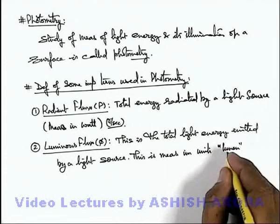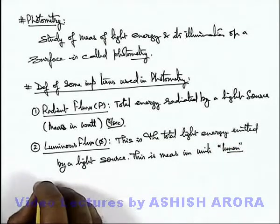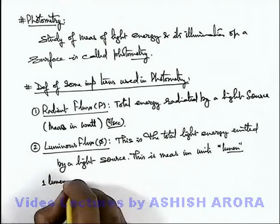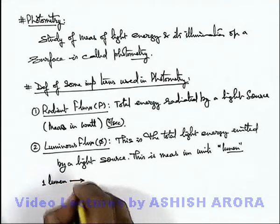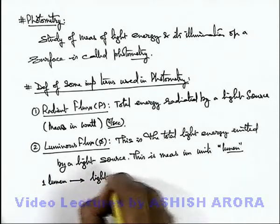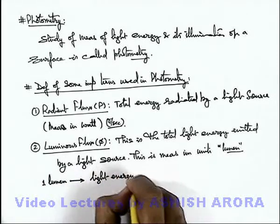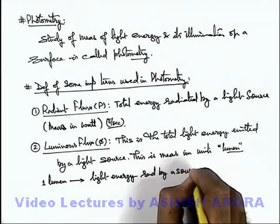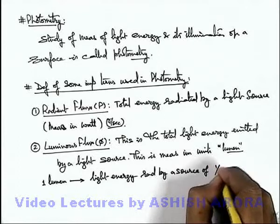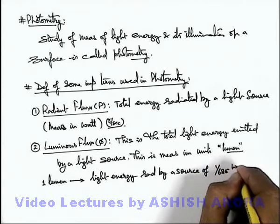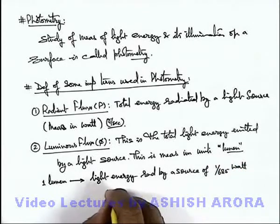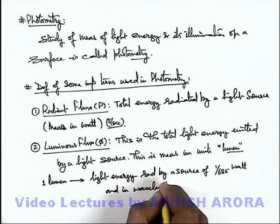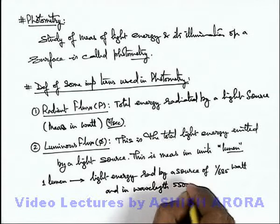Lumen is the unit used for measurement of light energy. We can also define how this lumen is stated. This one lumen can be defined as light energy radiated by a source of 1 by 685 watt and in wavelength 5500 angstrom.